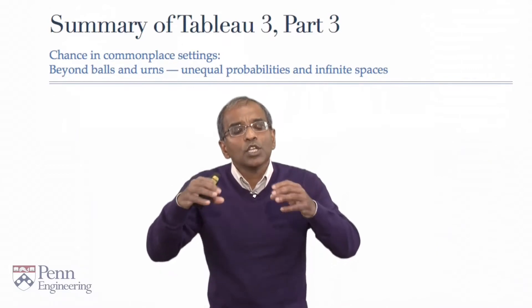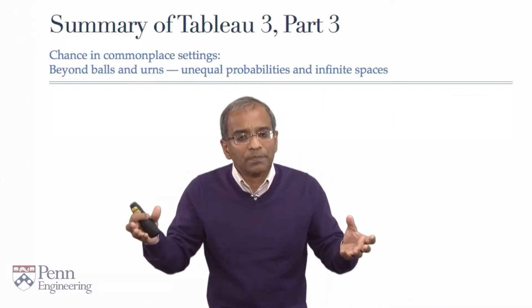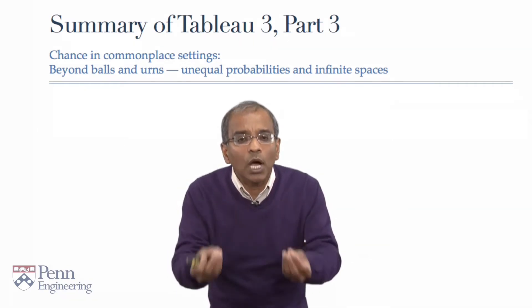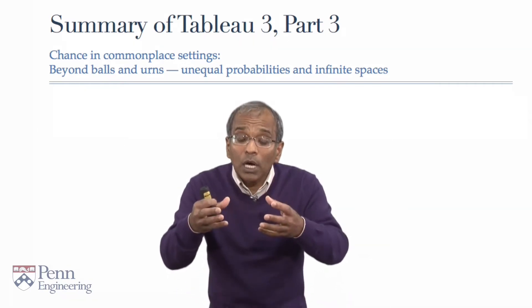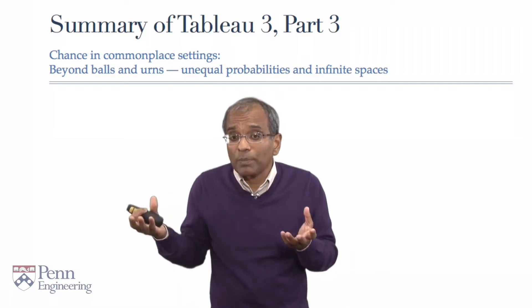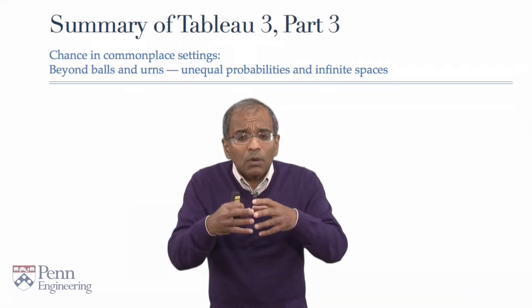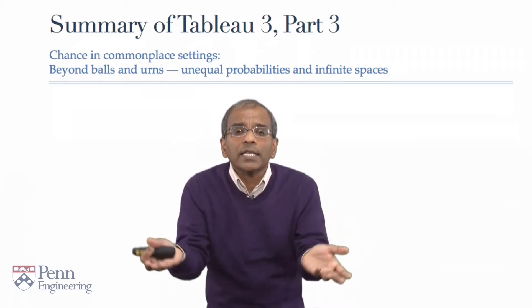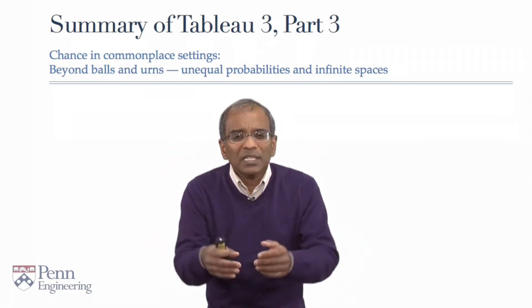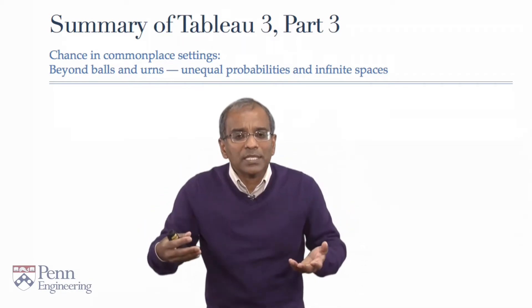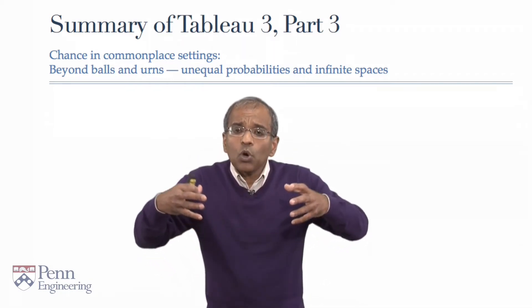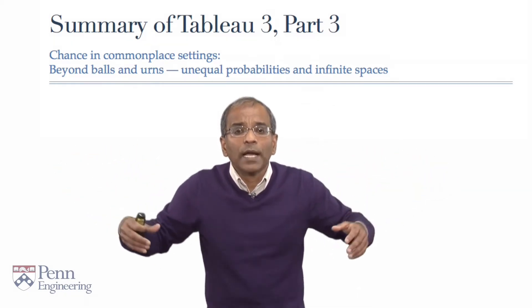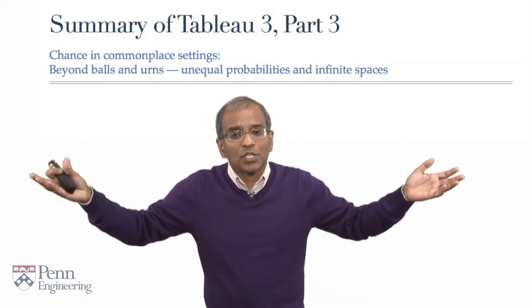So this is our summary: chance in commonplace settings. Chance experiments are governed by outcomes. These outcomes are chance-driven — they are not a priori predictable. We began by looking at outcomes which are constrained to be in a finite collection, a natural setting of combinatorial probabilities. Then we moved on to settings where we have more than a finite collection — in fact, potentially infinite collections of outcomes.